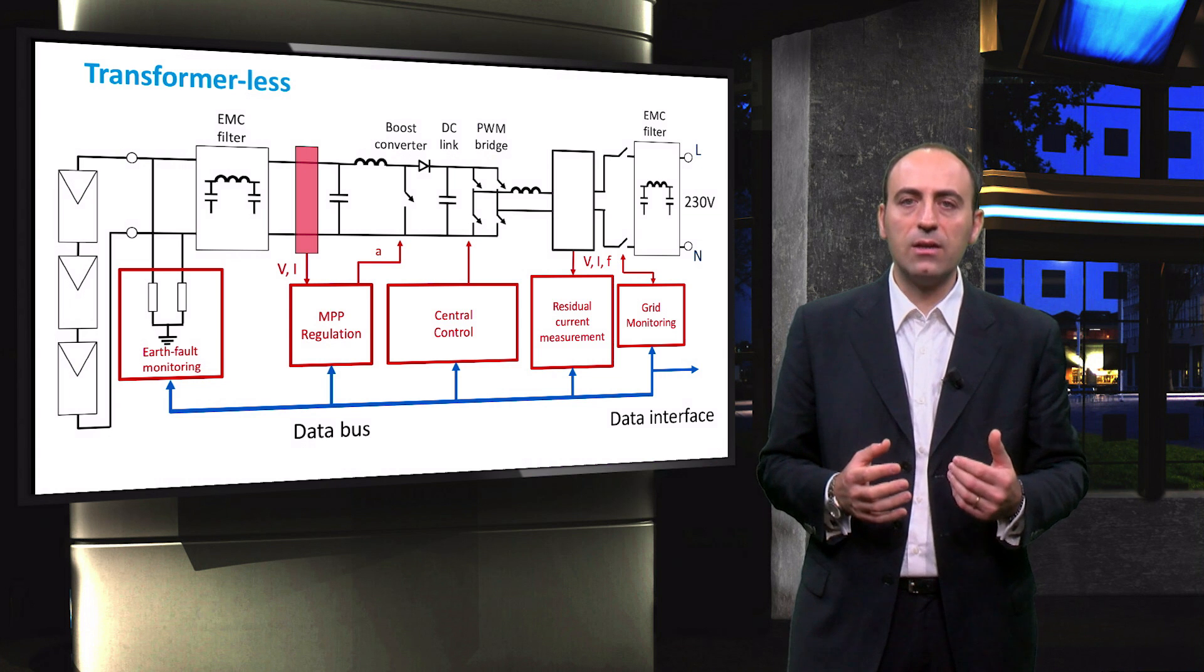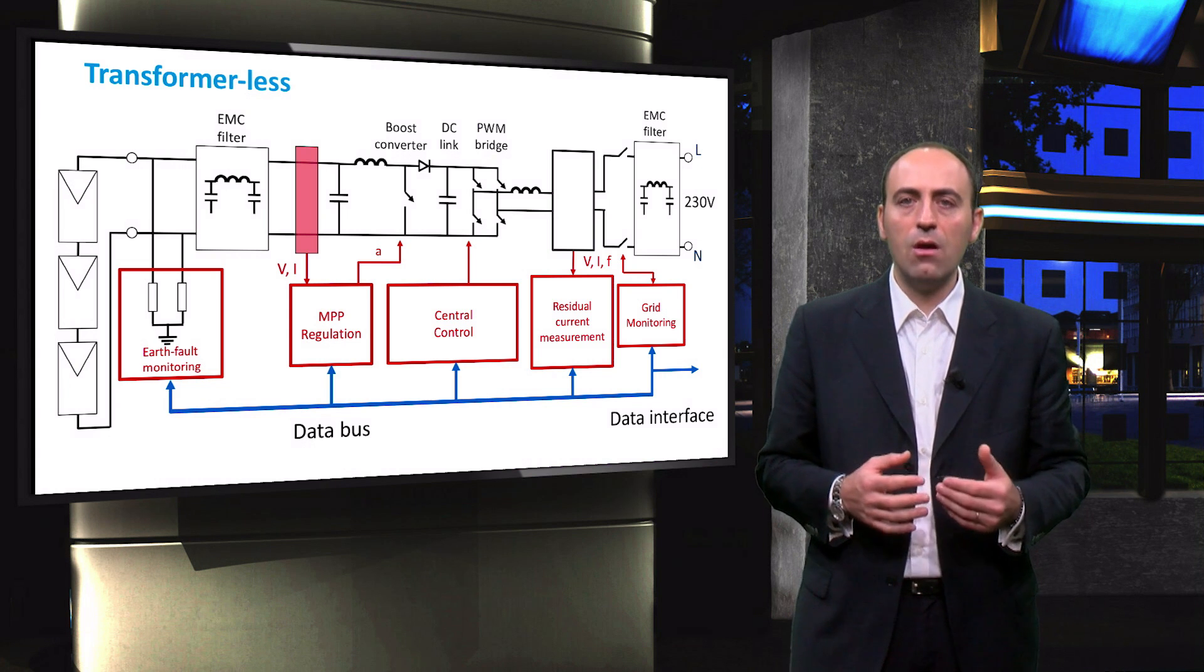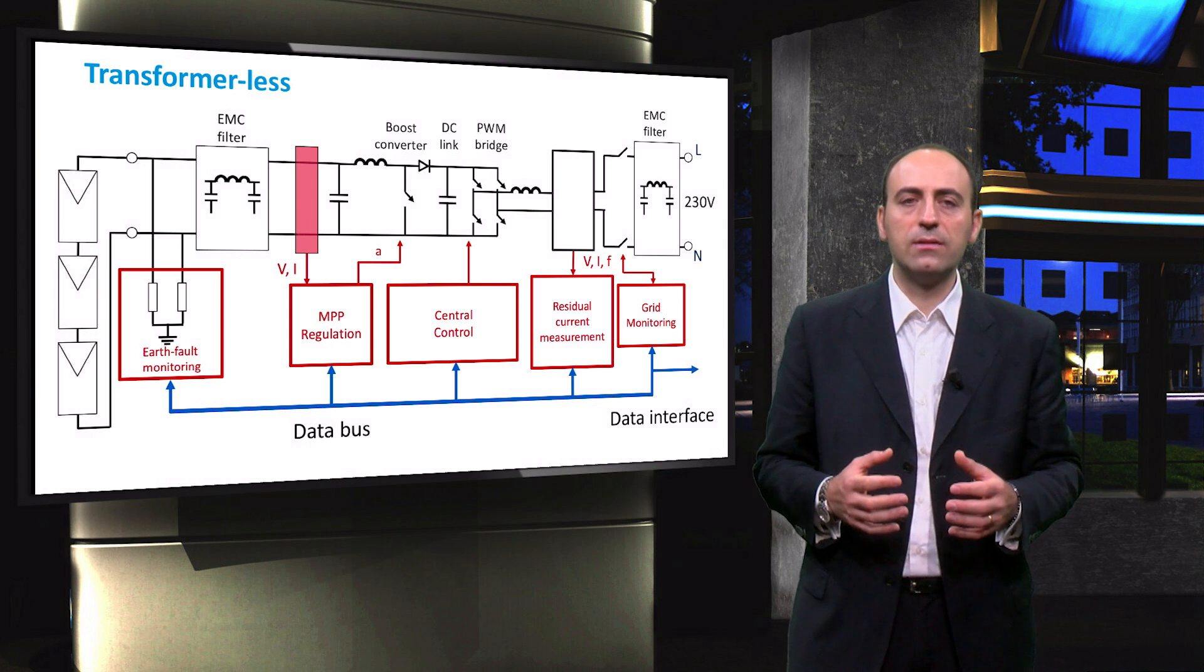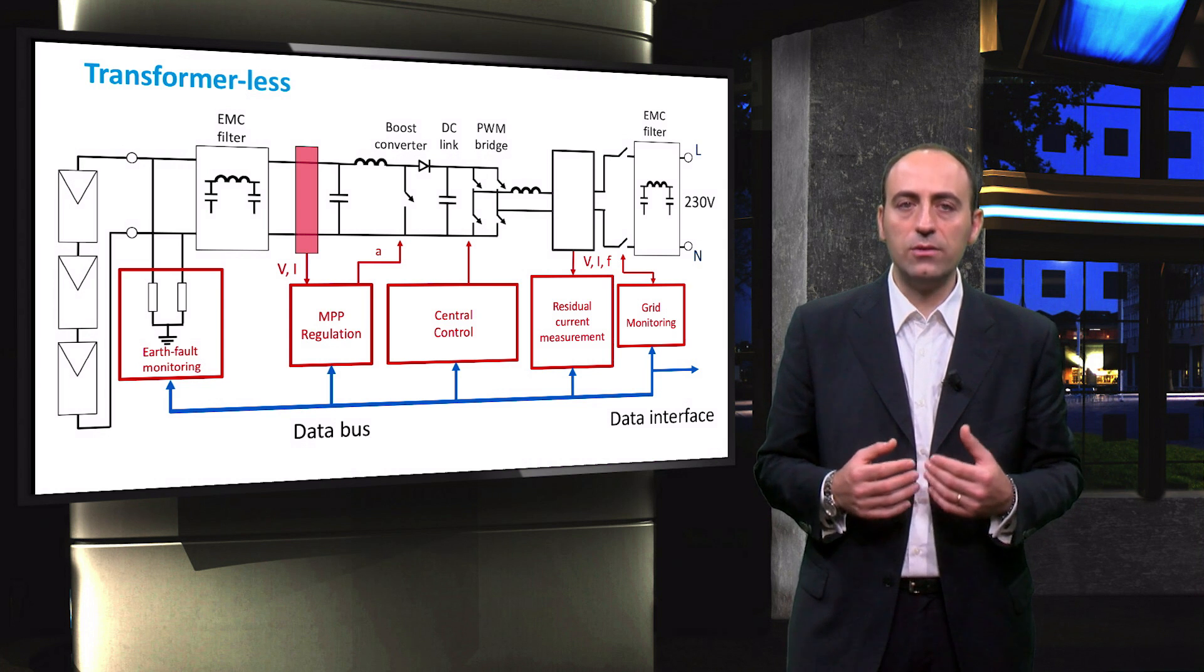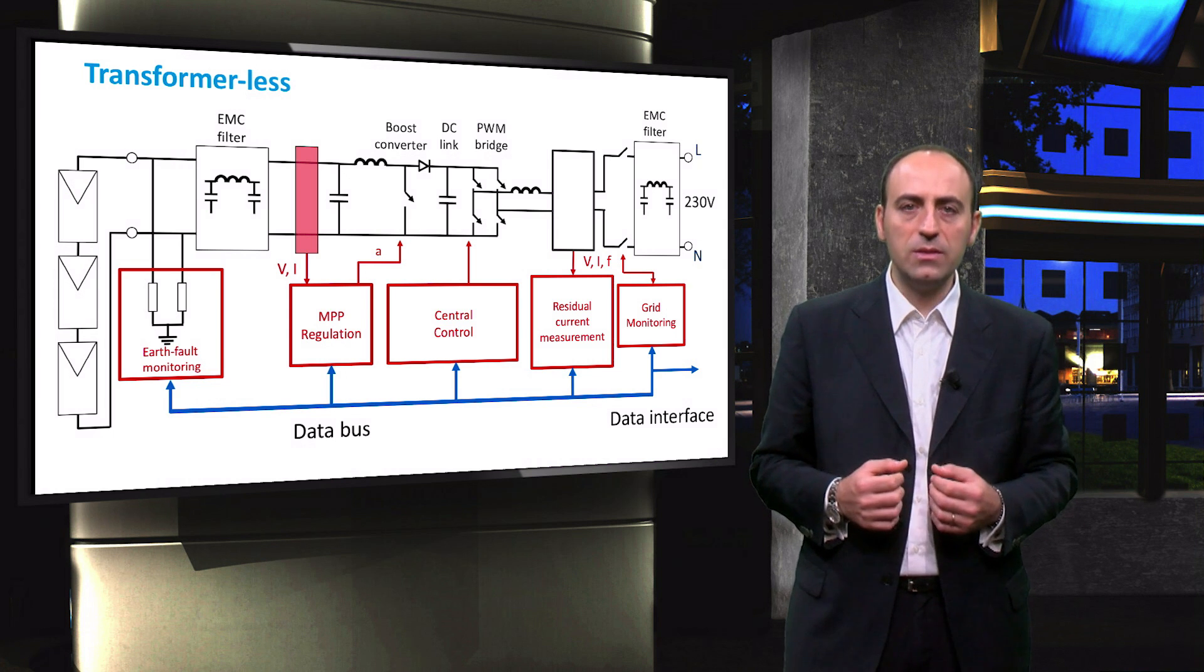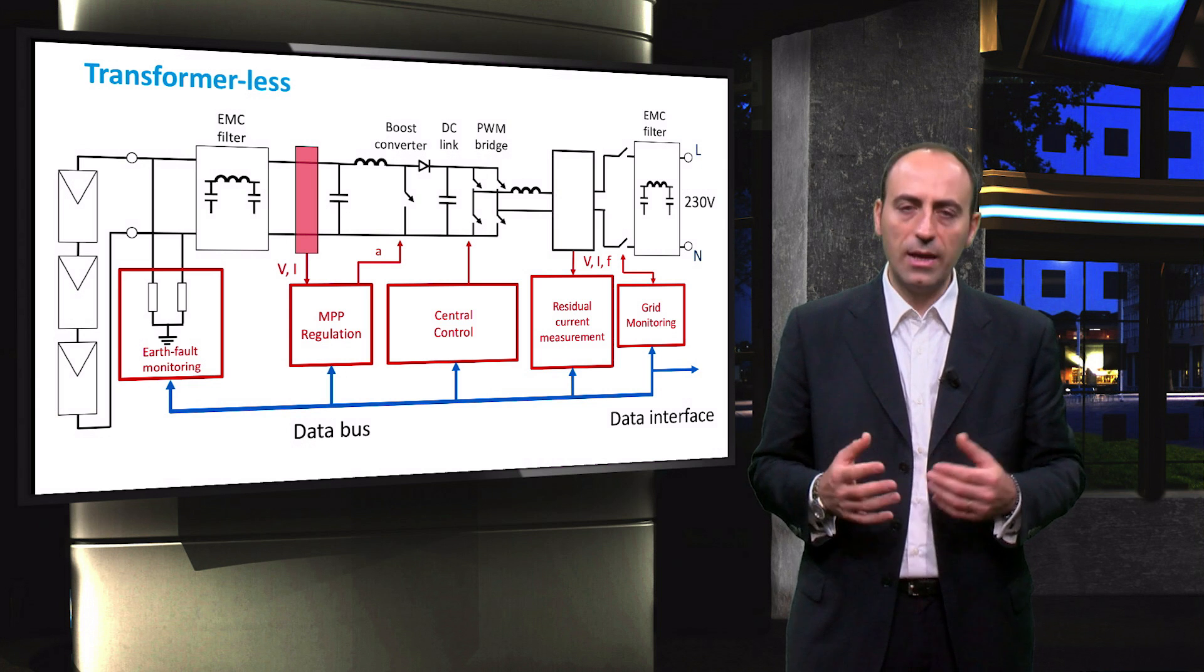In alternative, the data can also be stored in a web server for web-based applications. Among the information that the data bus is able to provide to users, we can have instantaneous power, energy generated by the PV system and transferred to the grid, and so on.